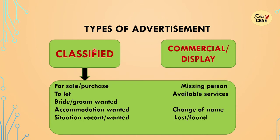Types of advertisement: classified ads, or commercial or display ads. We are today dealing with classified ads. The categories are: for sale and purchase, to let, bridegroom wanted, accommodation wanted, situation vacant and wanted, missing person, available services, change of name, and lost and found. These are the important categories from an examination point of view and I will be discussing all of them one by one.